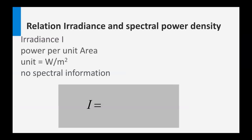Let's start with the irradiance and the spectral power density. The irradiance is a parameter which describes power per unit area, so the unit is watt per square meter. It tells us how much energy in a certain time per area is incident on a surface. Note that this parameter has no spectral information. So if I have an irradiance of 500 watts per square meter, I don't know whether this is focused on the blue spectral part, the red or the infrared. Irradiance only gives the power per unit area.